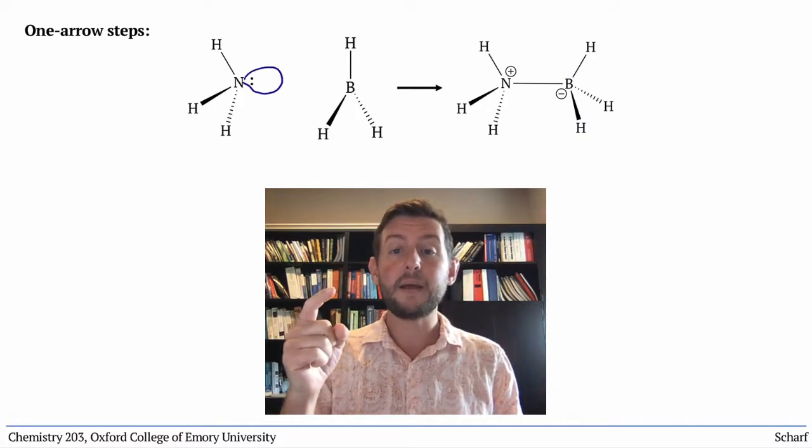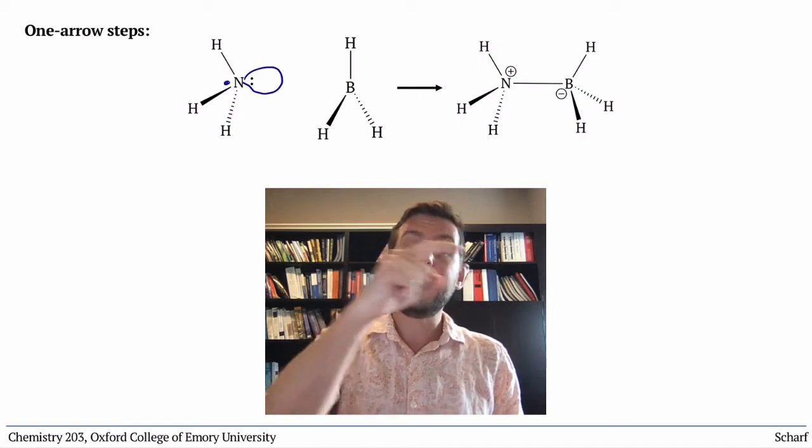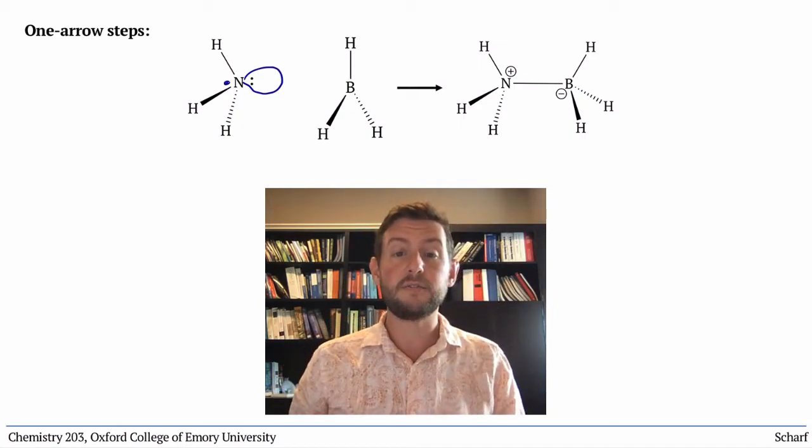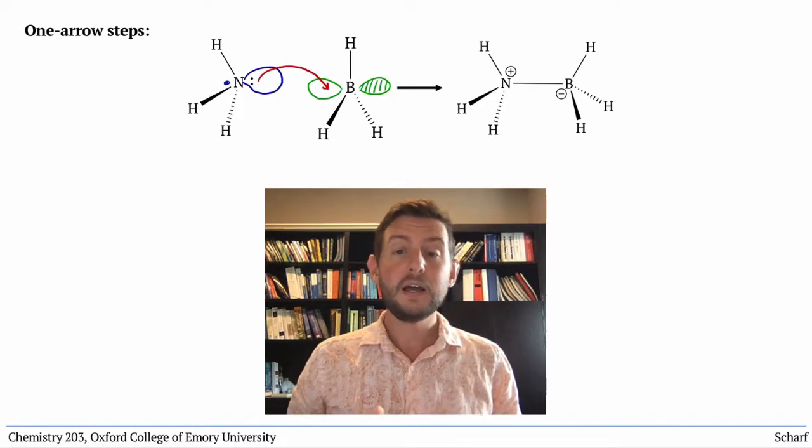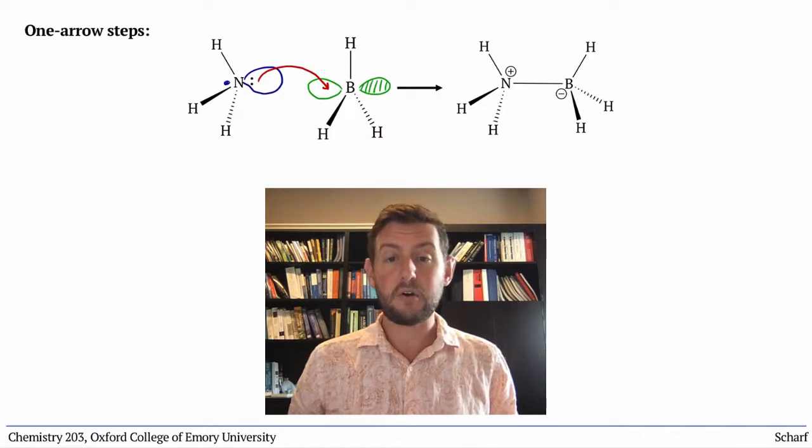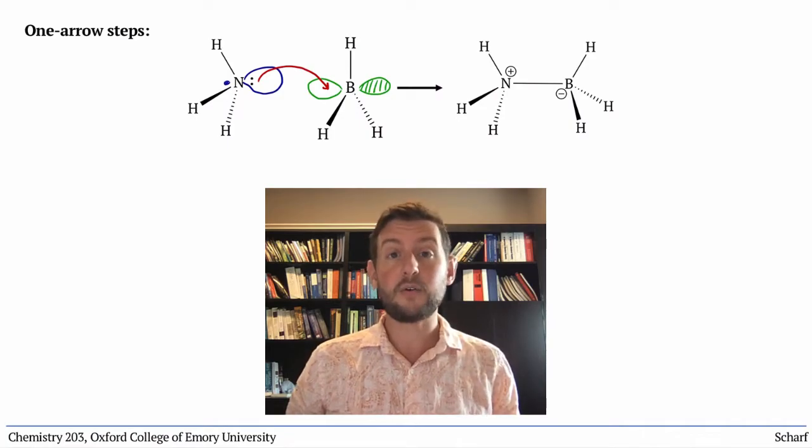here that's the lone pair on nitrogen, and ends at the LUMO of the electrophile, the empty P orbital on boron. I drew in the pictures of the orbitals here just to illustrate where the arrows go. We don't usually need to draw the orbitals themselves.